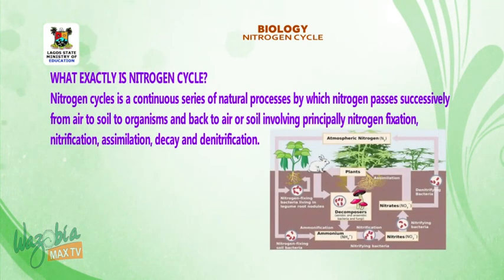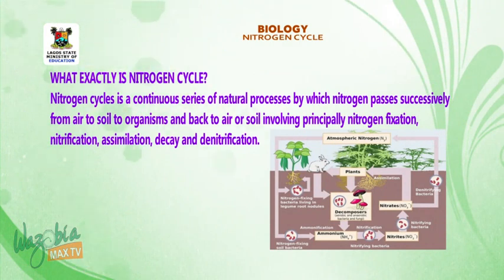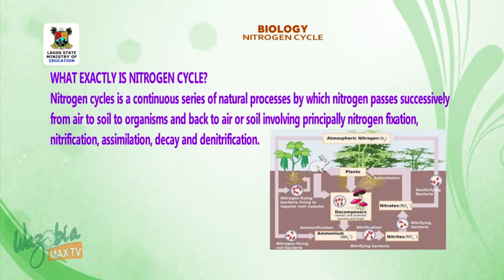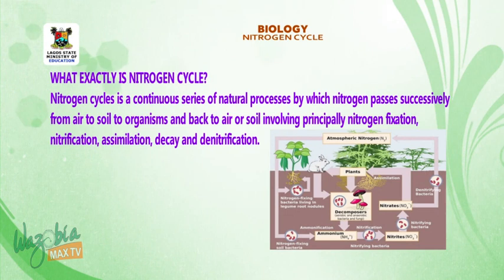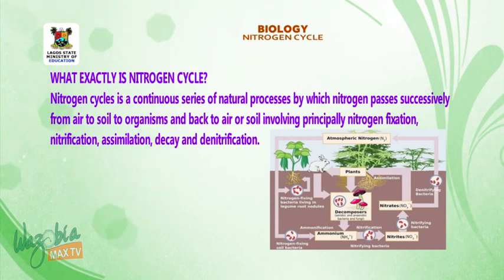What exactly is nitrogen cycle? Nitrogen cycle is a continuous series of natural processes by which nitrogen passes successively from air to soil, to organisms, and back to air or soil. It involves, principally, nitrogen fixation, nitrification, assimilation, decay, and denitrification.